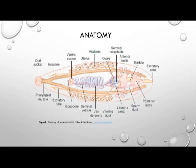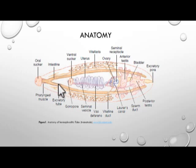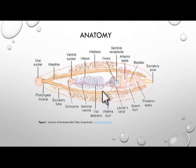Here is a diagram of Trematode anatomy. This is a hermaphroditic Trematode. Beginning with the oral sucker and oral cavity at its center, followed by the muscular esophagus, then branching into two intestinal tracts that run down the length of the body, evacuating waste through the excretory pore at the posterior end. Being hermaphroditic, this species contains both sexes, including ovaries and a seminal receptacle, so both male and female reproductive systems are present.